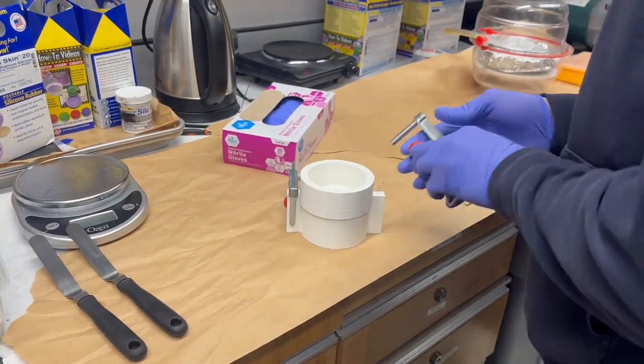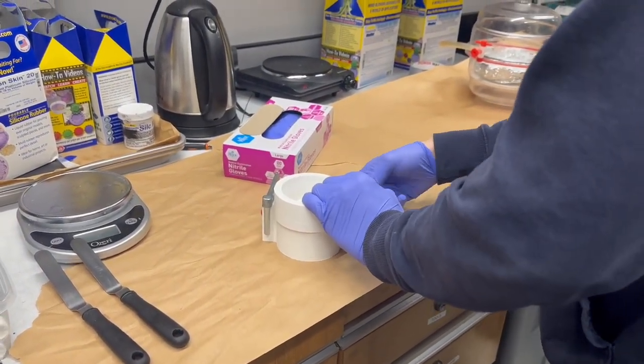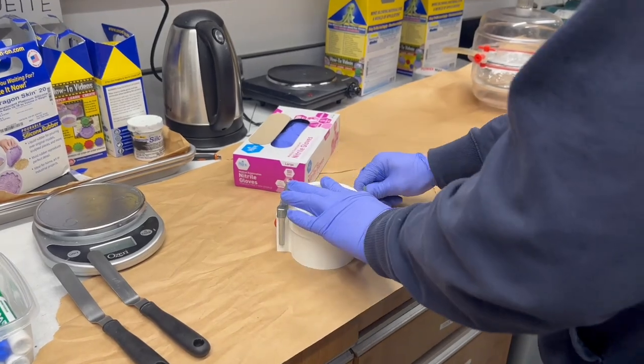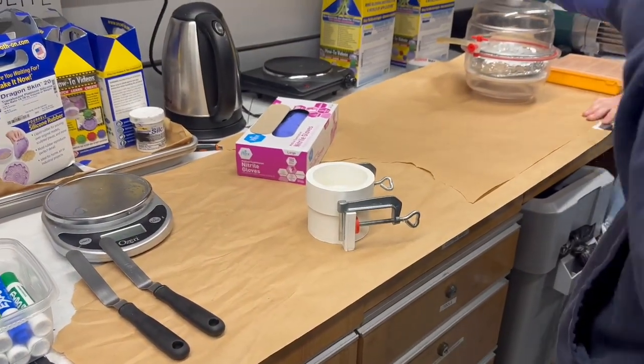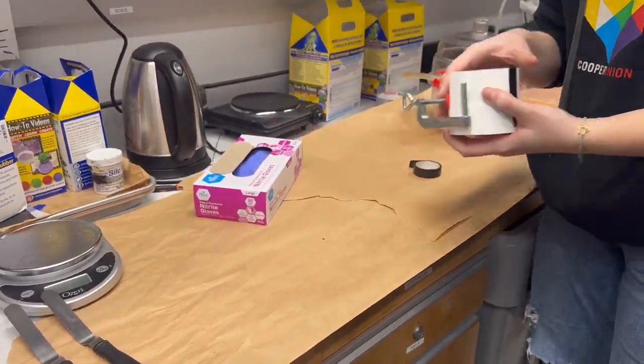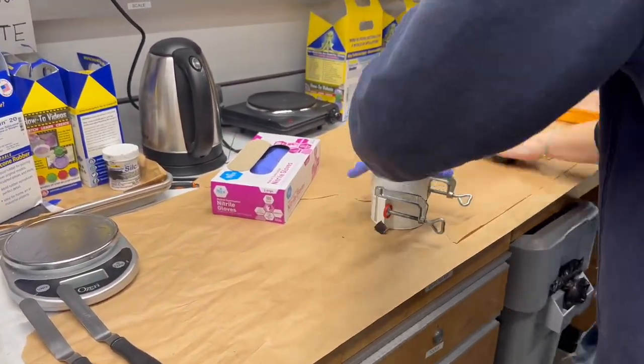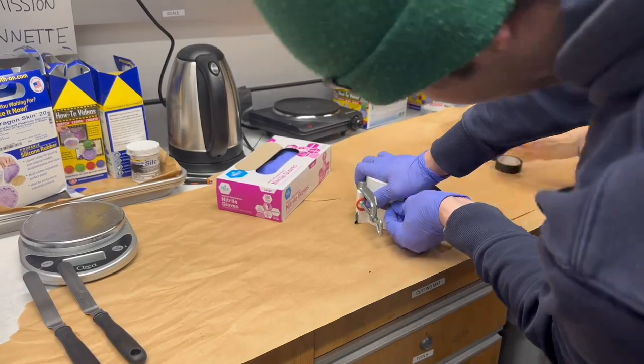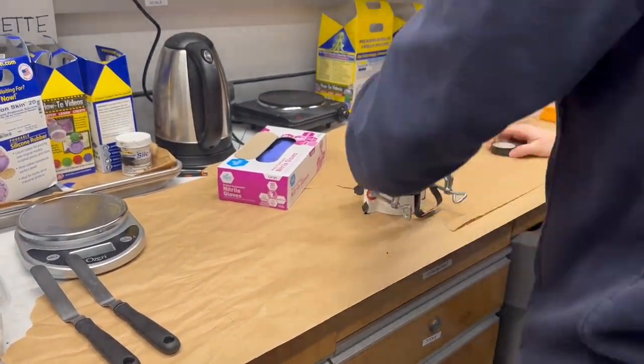First, we secured the wheel hub to the mold using a screw through the bottom, which was already done. We then used clamps and electrical tape to secure and seal both halves of the mold together to ensure that the silicone would not leak through the seams. We were concerned, so we took these precautions, and it did work well.